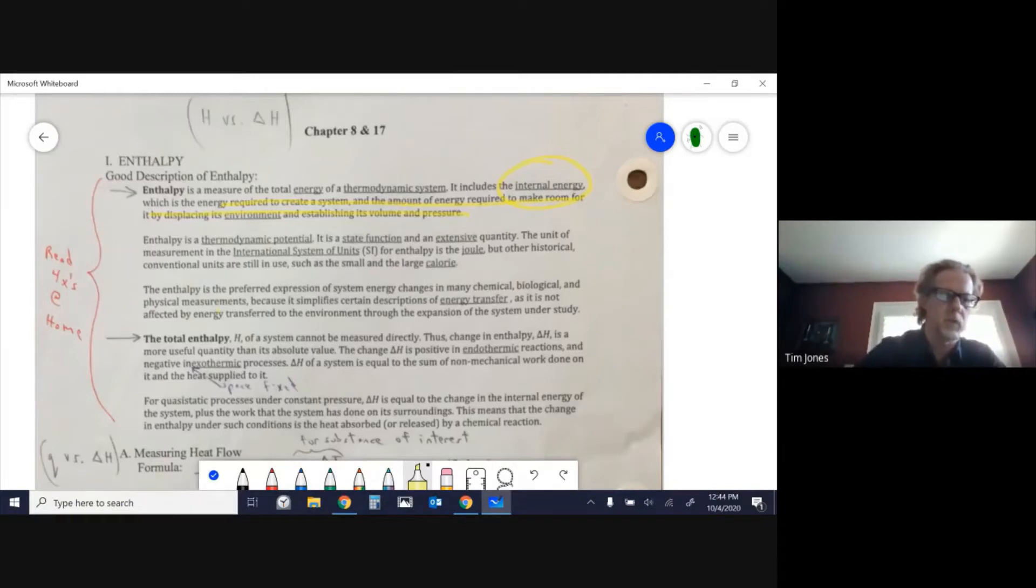The total enthalpy cannot be measured directly, so you typically don't see H listed. You see delta H, the change in enthalpy, defined as positive for endothermic processes and negative for exothermic processes.